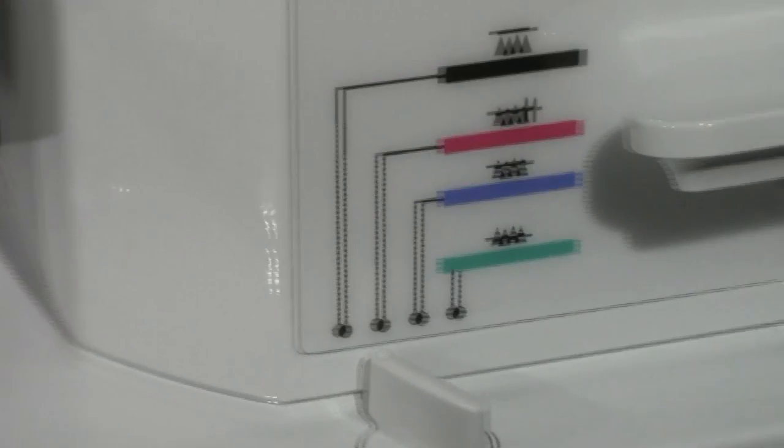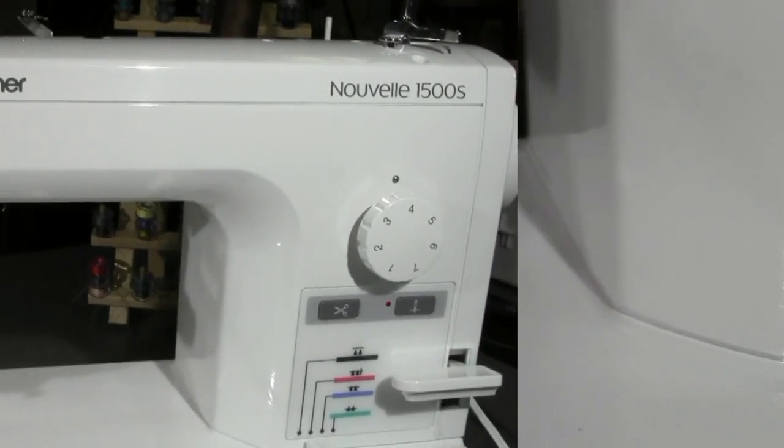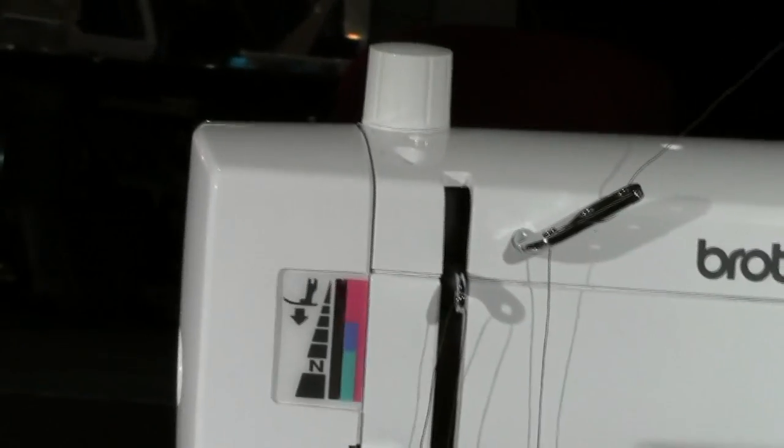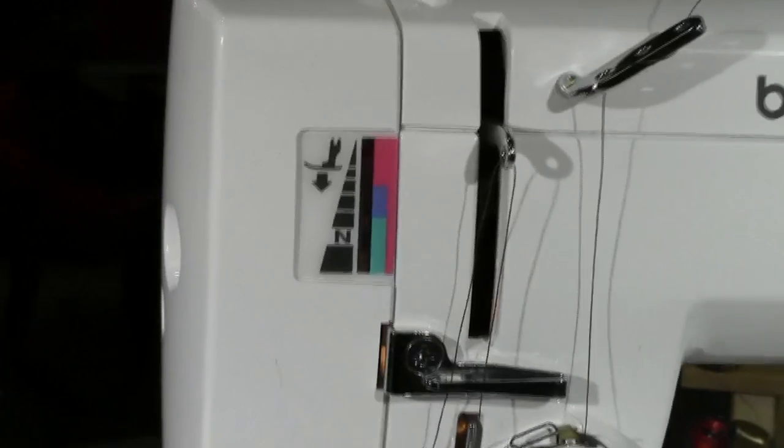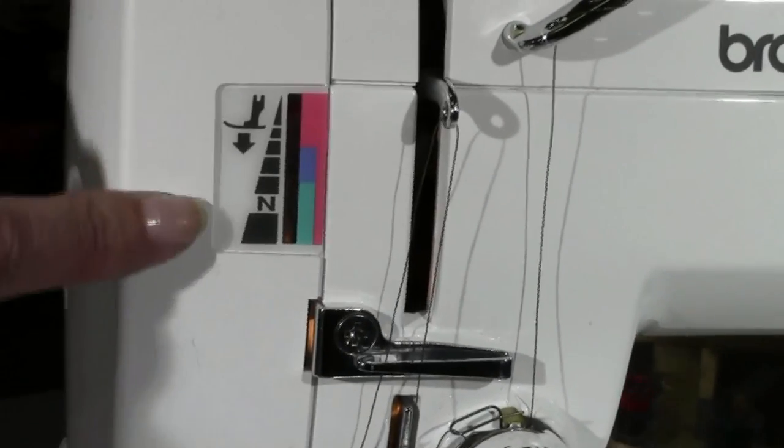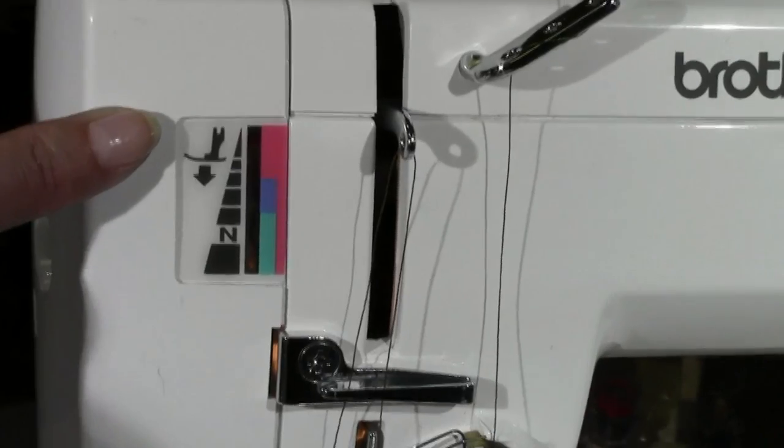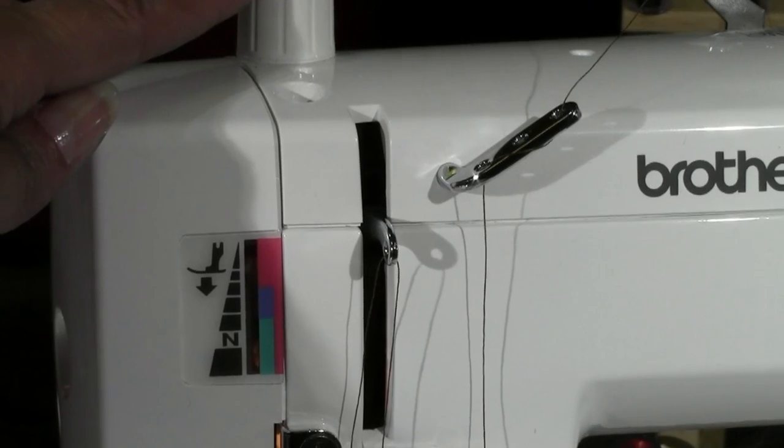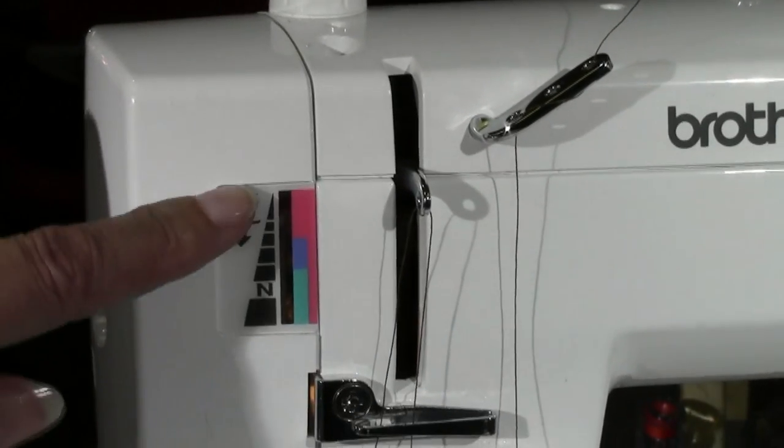Then let's go up here and look at this part here. This part is a really nice feature on this machine. This is the height of your presser foot. And to adjust that, you just adjust this right up here. Very easy to use, color coded the same.